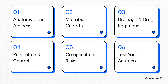Here's our game plan. We're going to break this down into six key areas. We'll start with the basics — the anatomy and clinical signs. Then we'll get into the crucial microbiology, figuring out what we're actually fighting. After that, we'll cover the cornerstones of treatment, touch on prevention, look at the very serious risks involved, and finally put your knowledge to the test.